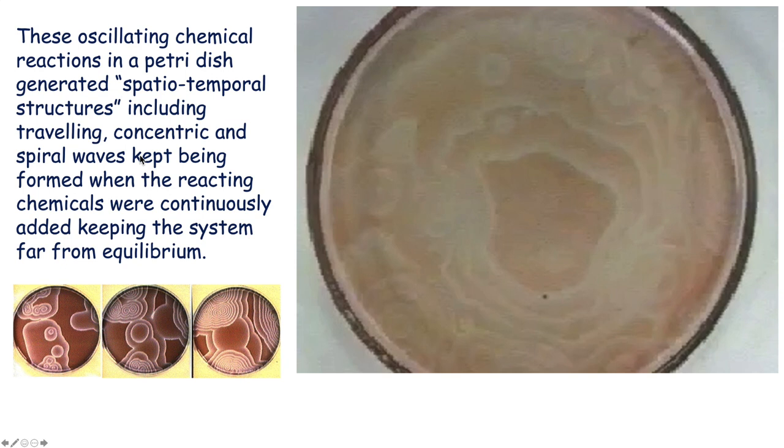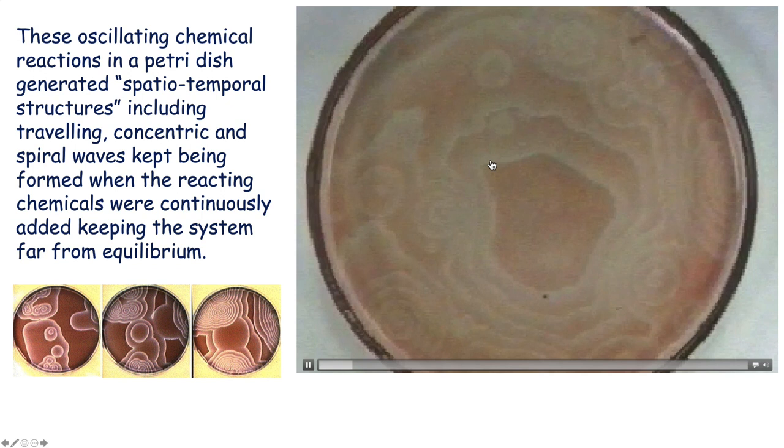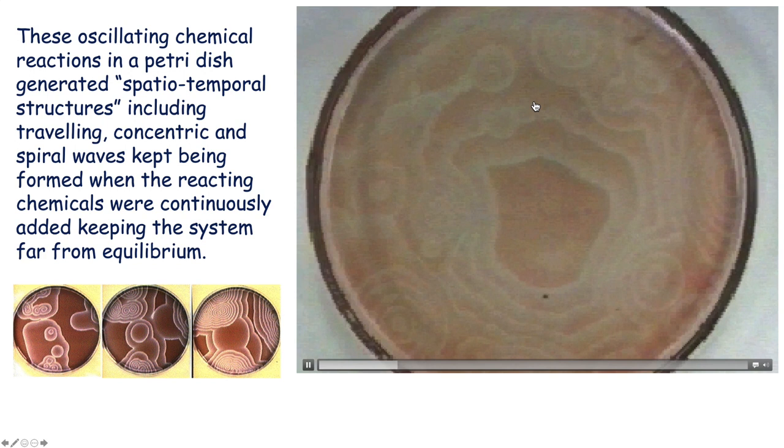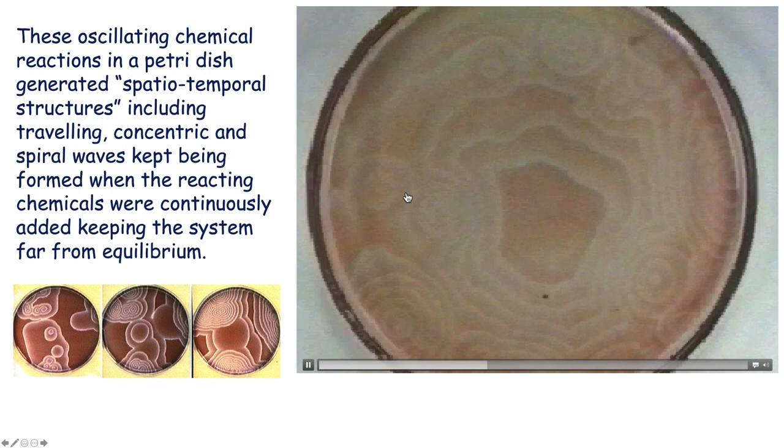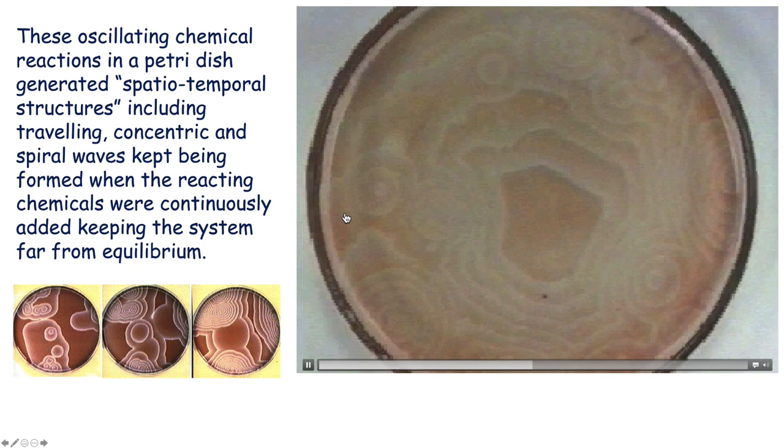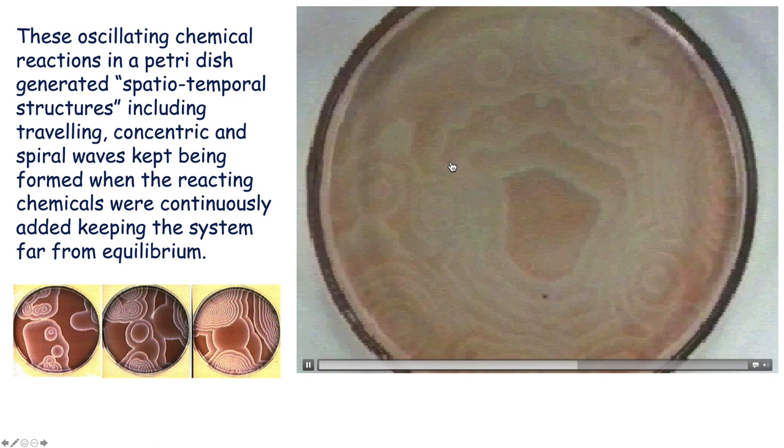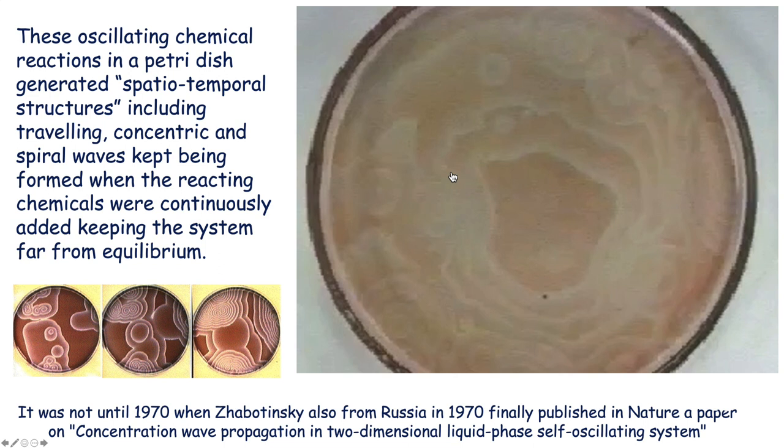In a petri dish, if you show this reaction happening, they form a remarkable spatial-temporal structures, including traveling waves which change of location, concentric waves start and expand. There are even some spiral waves. And therefore this really is a system which should be kept far from equilibrium, will go forever. This shows indeed the formation of order out of complete disorder of chemical reactions.